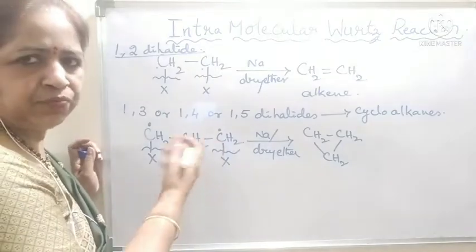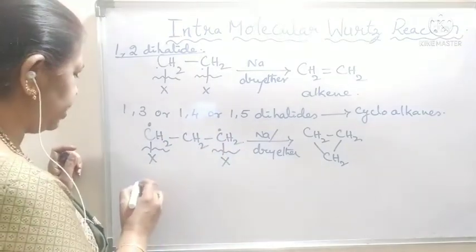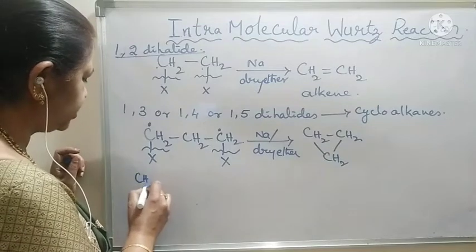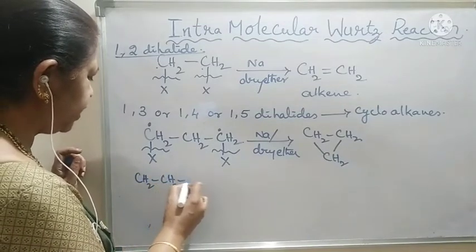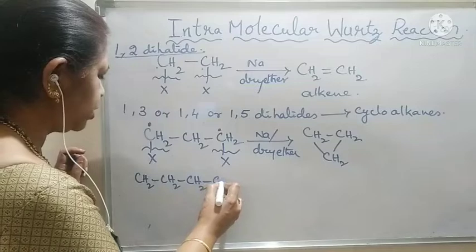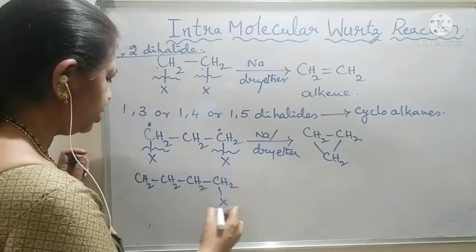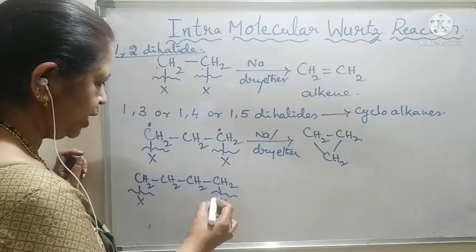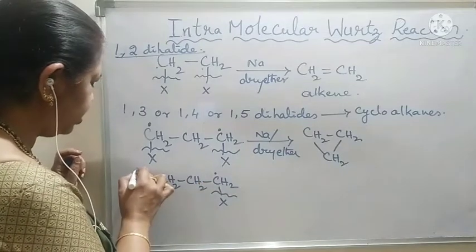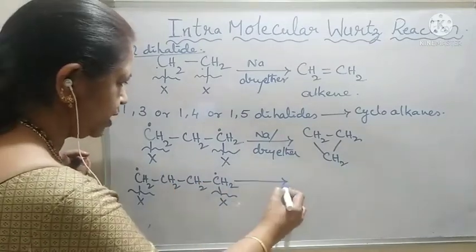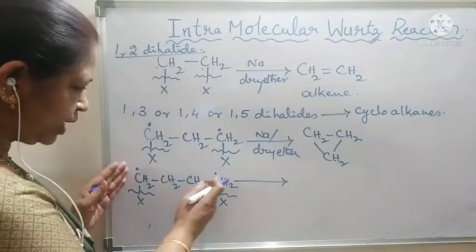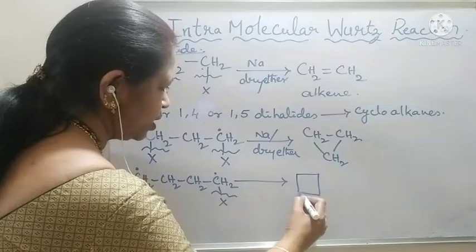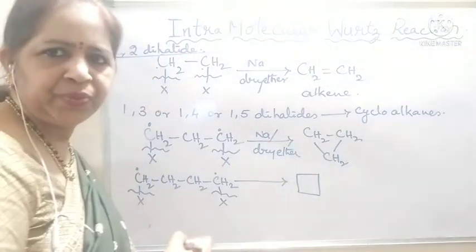If we take a 1,4-dihalide: a four-carbon chain with halogen atoms on the terminal carbon atoms. The bonds will be broken homolytically to form free radical sites on the terminal carbon atoms. These two free radicals will join together to form cyclobutane.